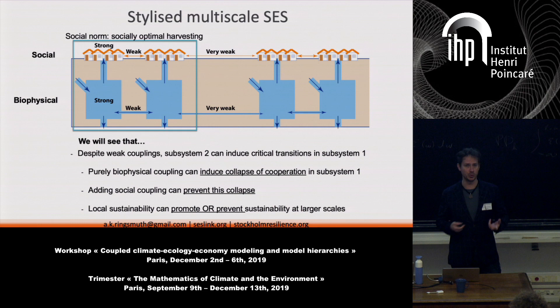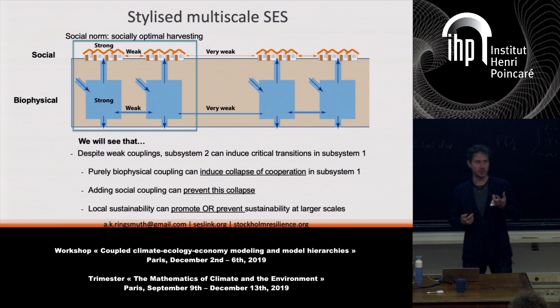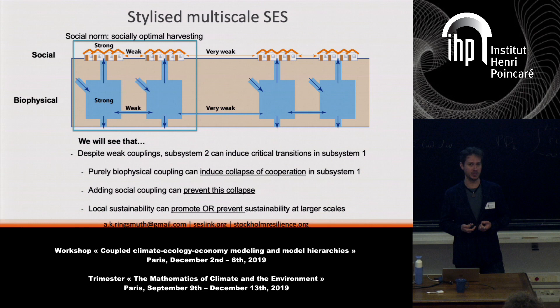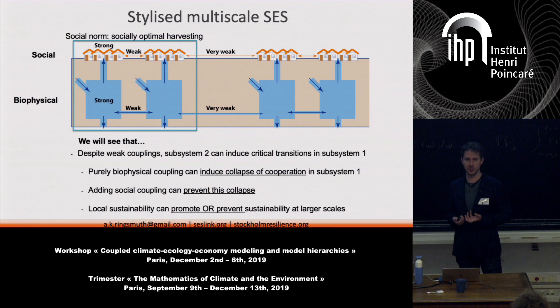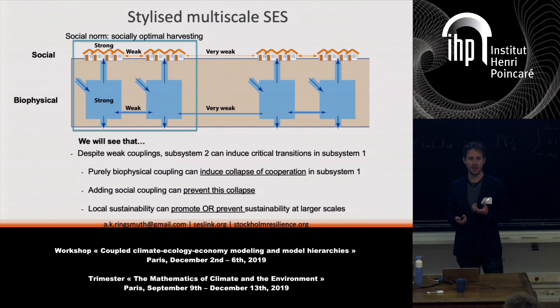We show a model describing just a pair of these subsystems. Despite weak couplings between the subsystems, subsystem 2 can induce critical transitions in subsystem 1 — they are strongly mutually dependent. When the coupling is only biophysical, subsystem 2 can induce collapse of cooperation, meaning collapse of a social norm of sustainable behavior. But when we add social interaction between the two systems, we can prevent that collapse. The take-home message is that local sustainability can promote or prevent sustainability at larger scales. The adage to 'think global, act local' is too simplistic — we also have to think about how we're interacting with other coupled communities.